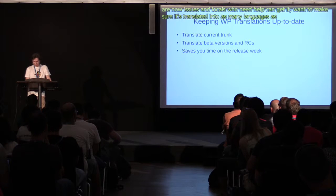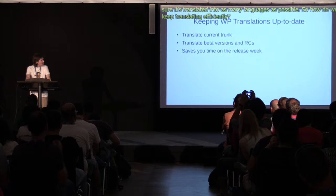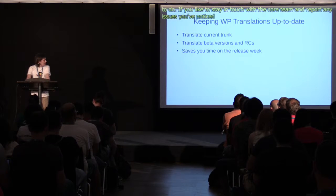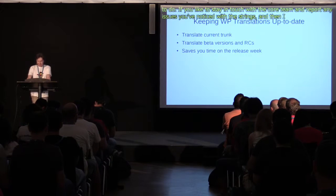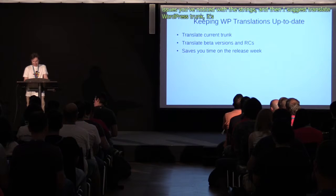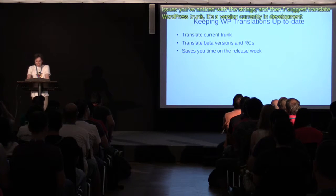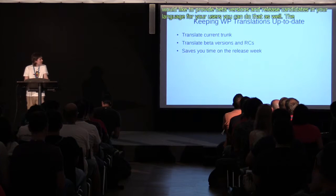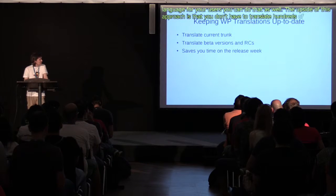How do we keep translating efficiently? It depends on what you'd like to do. If you'd like to stay in touch with the core team and report any issues you've noticed with the strings, I'd suggest translating WordPress trunk — the version currently in development. If you'd like to provide better beta versions and release candidates in your language, you can do that as well. The upside is you don't have to translate hundreds of strings at once during release week, but the downside is it takes about an hour per week and the strings can change later. If you don't like making too many edits, that's fine — just wait for a string freeze, which is generally announced a couple of weeks before the release.